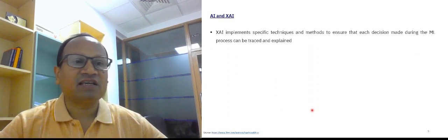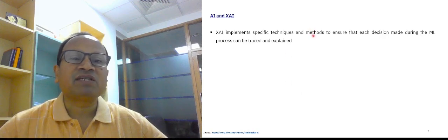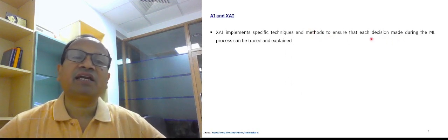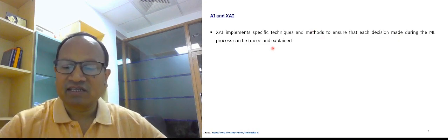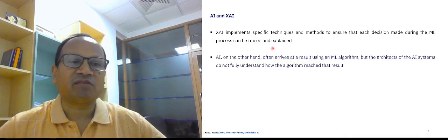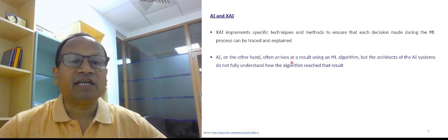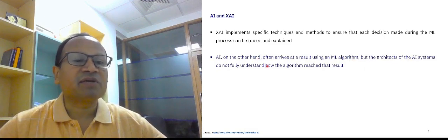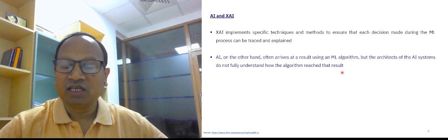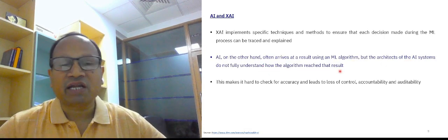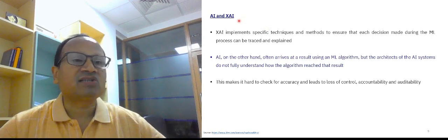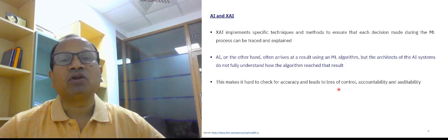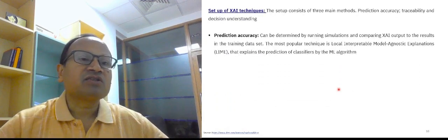If you compare AI and XAI, XAI implements specific techniques and methods to ensure that each decision made during the ML model or process can be traced, explained, proper explanation can be given. AI, on the other hand, often arrives at a result using an ML algorithm, but the architects of AI system do not fully understand how the algorithm resulted the result. So it's kind of black box that is enhanced in XAI. This makes it hard to check accuracy and leads to loss of control, accountability, and auditability.